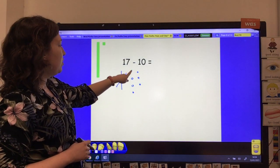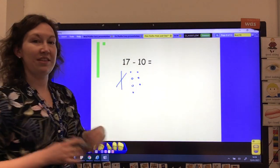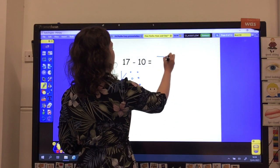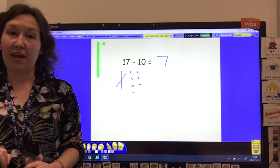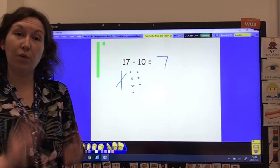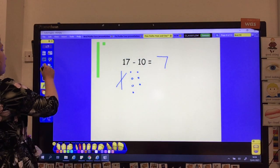So 1, 2, 3, 4, 5, 6, 7. There's 7 left. 17 take away 10 equals 7. So well done if you correctly worked the answer out at home.